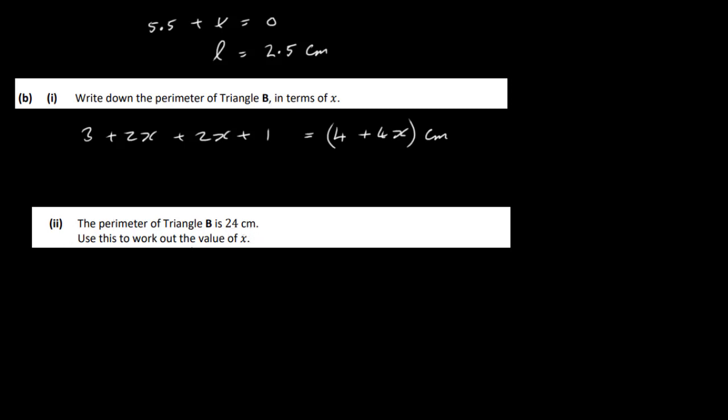The perimeter of triangle B is 24. Use this to work out the value of x. So 4 plus 4x equals 24. That means 4x equals 20, which means x equals 20 divided by 4, which is 5. So we have the value for x.